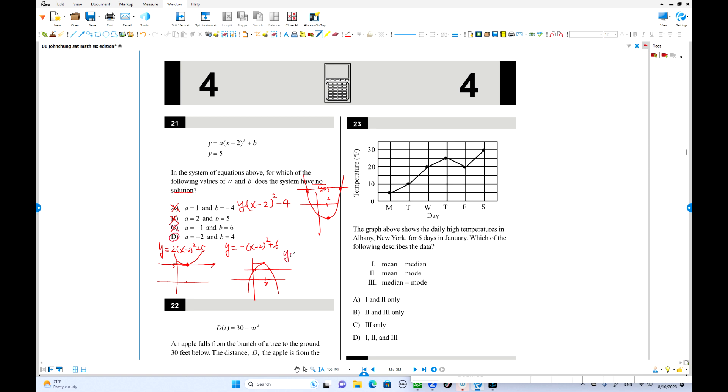This is the answer then. Maybe you can check it out. y equals negative 2 x minus 2 squared, b is 4. Where is b? b is 4 over here. The graph is open downward. Where is y equals 5? Up here, right, above this point. There is no intersection. So D is the answer.